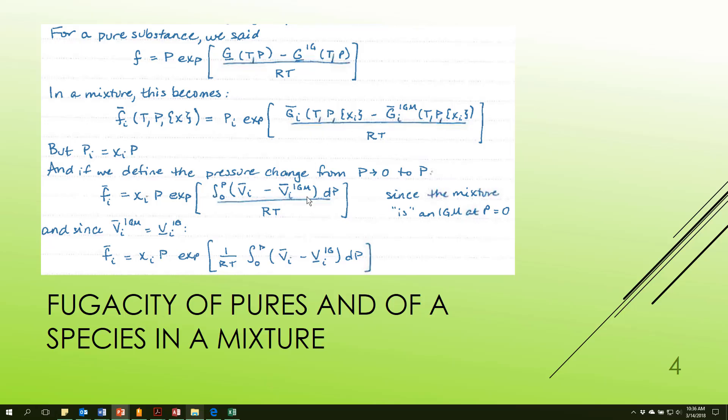I'm looking at this and I end up with the integral from zero to p, because at zero pressure I have an ideal gas mixture, to the fixed pressure, which is my actual partial molar volume. If I do this for a pure substance, then I could end up with this. I could subtract off the molar volume.